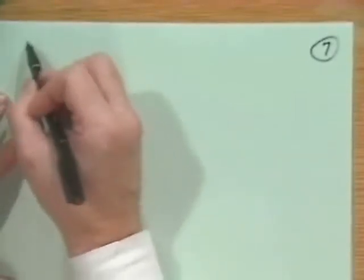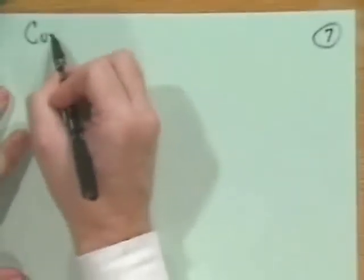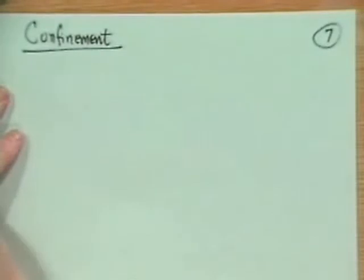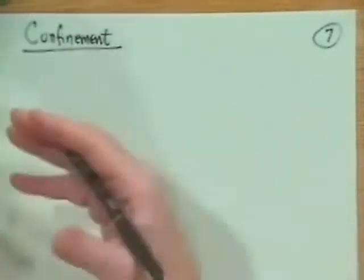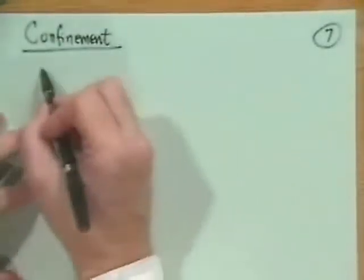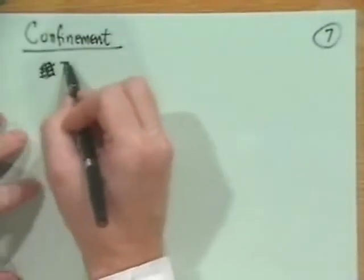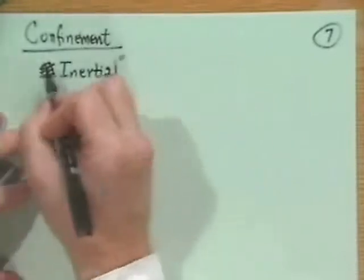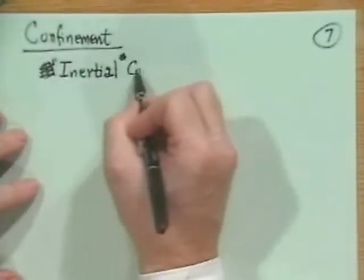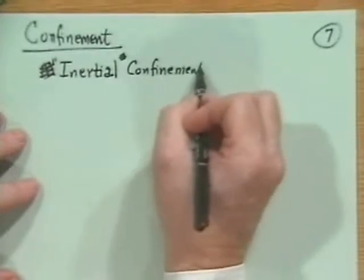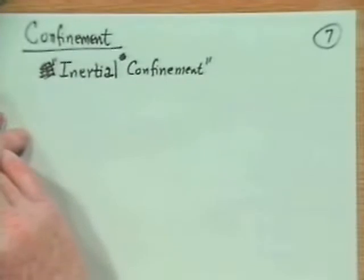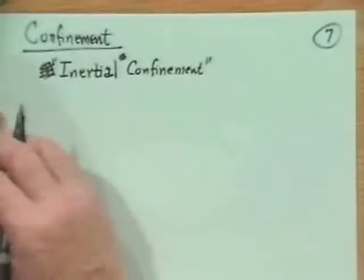So there's two types of confinement. We're going to talk quite a lot about magnetic confinement and sometimes inertial confinement in the course. Let me start with inertial first. Inertial confinement, you almost ought to put in parentheses because what it really means is have an explosion and get it over with quick. And inertia, the fact that the particles just don't move too fast, is what confines them.